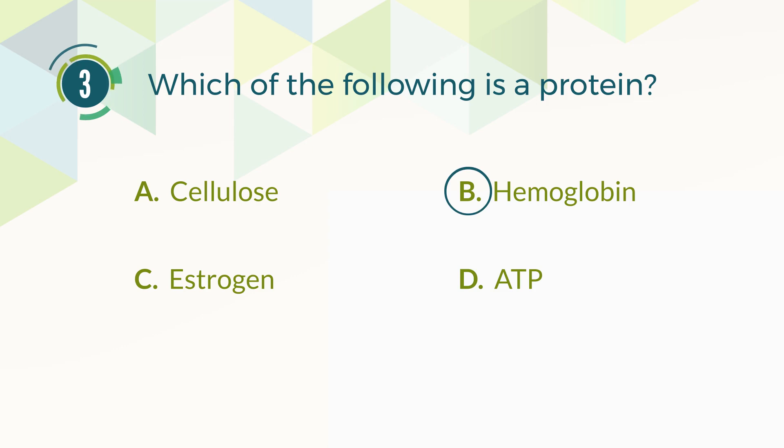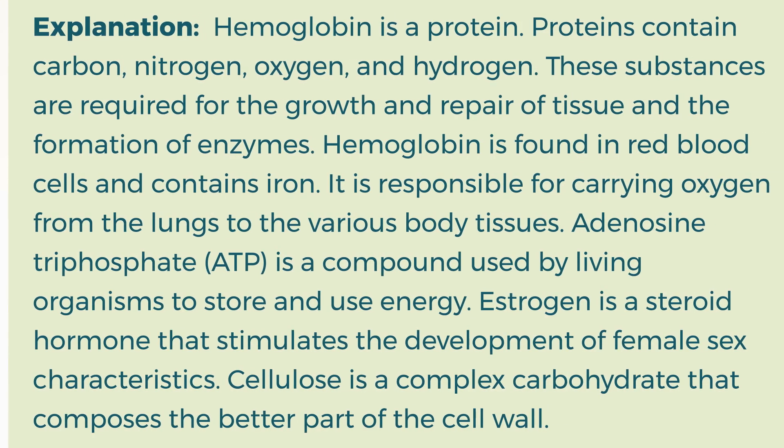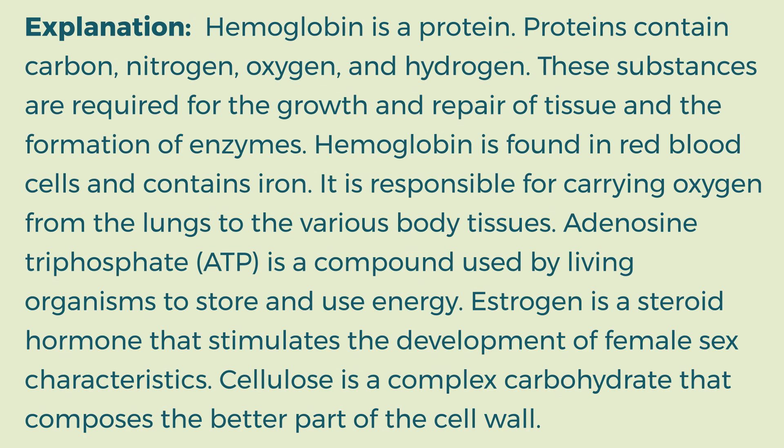The correct answer is B. Hemoglobin. Explanation: Hemoglobin is a protein. Proteins contain carbon, nitrogen, oxygen, and hydrogen. These substances are required for the growth and repair of tissue and the formation of enzymes. Hemoglobin is found in red blood cells and contains iron. It is responsible for carrying oxygen from the lungs to the various body tissues. Adenosine triphosphate (ATP) is a compound used by living organisms to store and use energy. Estrogen is a steroid hormone that stimulates the development of female sex characteristics. Cellulose is a complex carbohydrate that composes the better part of the cell wall.